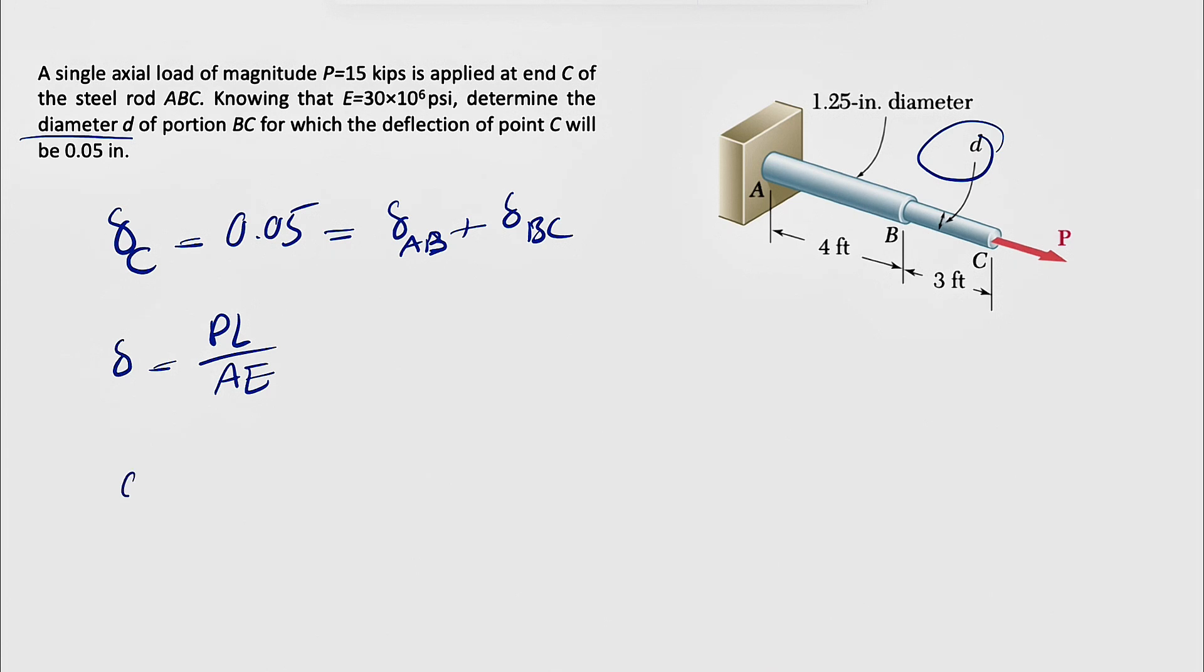If we just rewrite the equation, we're going to have 0.05 is equal to PL AB over area of AB times E. It's a steel rod, so the force P and the elastic modulus is the same, and we're going to have P, this time L of BC over ABC times E.